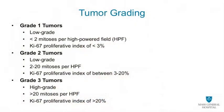Grade 1 tumors have less than 2 mitoses per high-powered field and a KI-67 index of less than 3%. Grade 2 tumors have 2 to 20 mitoses per high-powered field or a KI-67 index of between 3 and 20%. Grade 3, or high-grade tumors, have greater than 20 mitoses per high-powered field or a KI-67 index of greater than 20%. The vast majority of PANNETs, or pancreatic neuroendocrine tumors, are low-grade, grade 1 or 2.